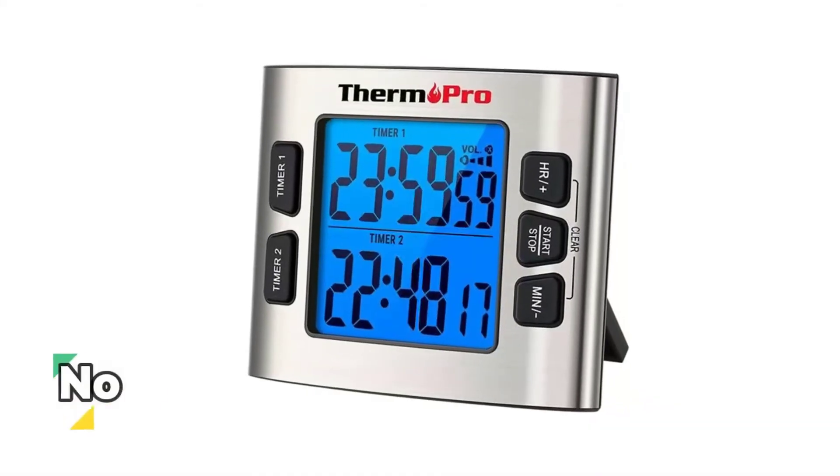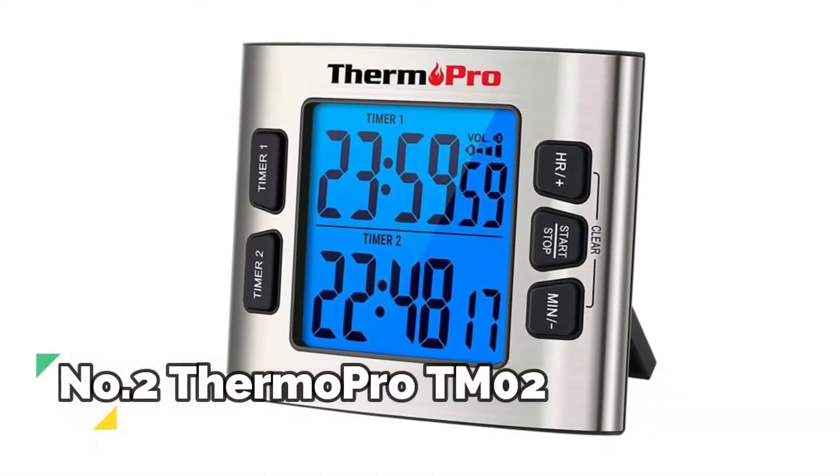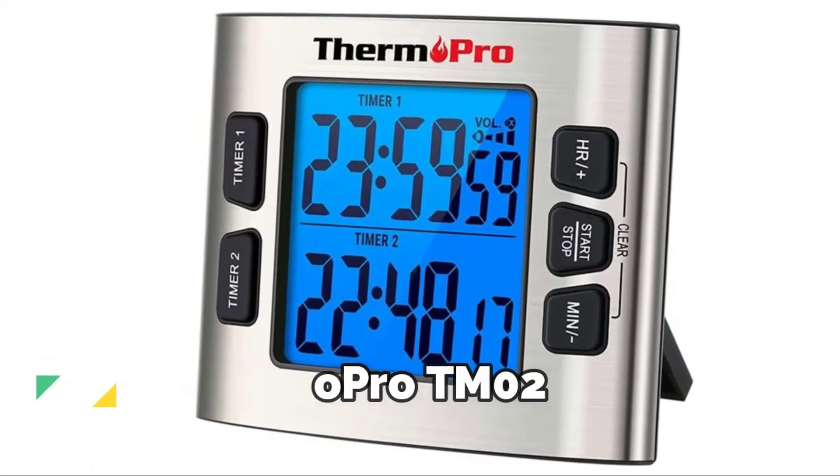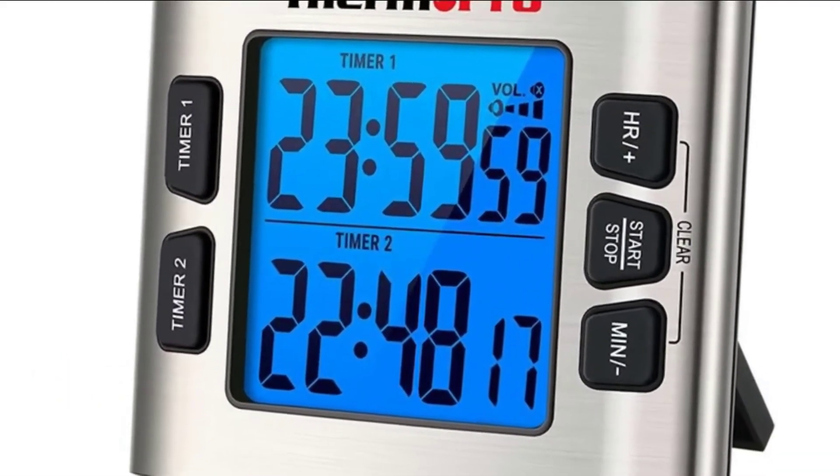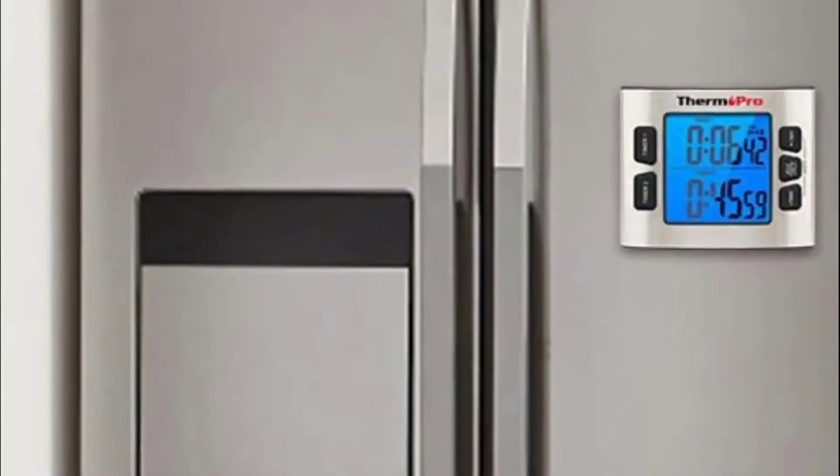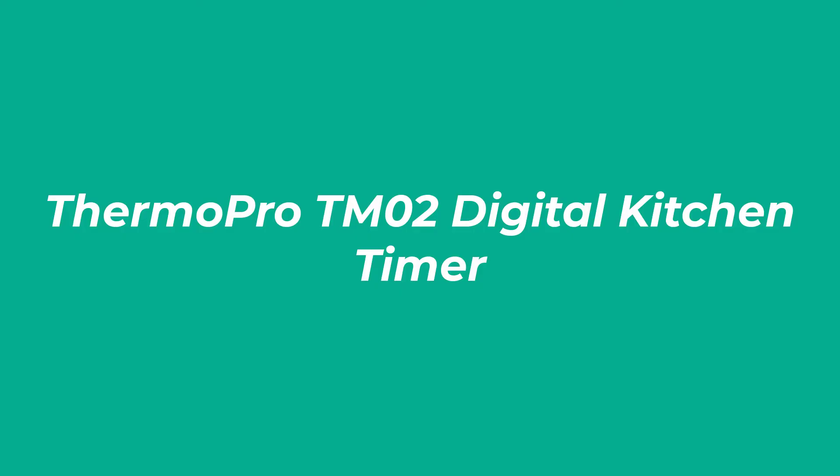First of all, opt for something as simple to use as possible, since you won't want any extra responsibilities in the cooking process. Secondly, find what works best for you between a digital and a mechanical timer option.